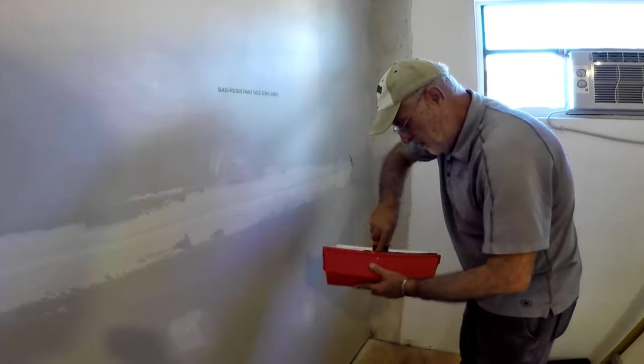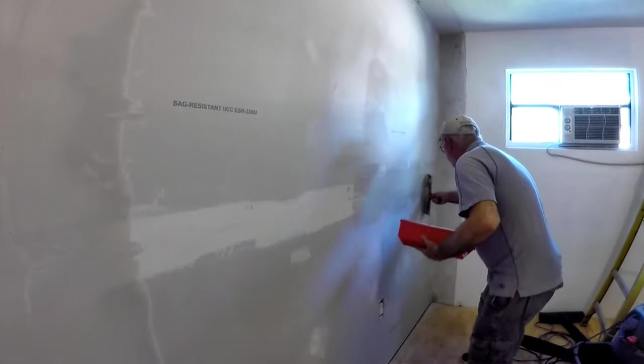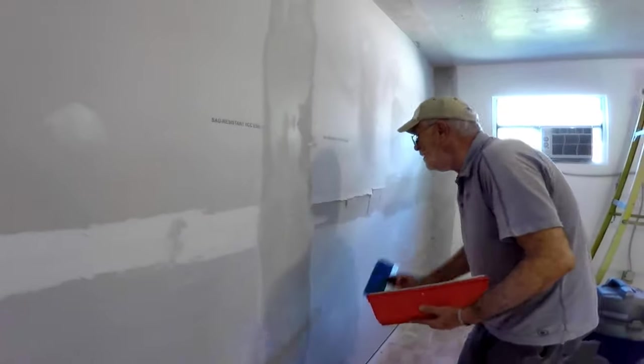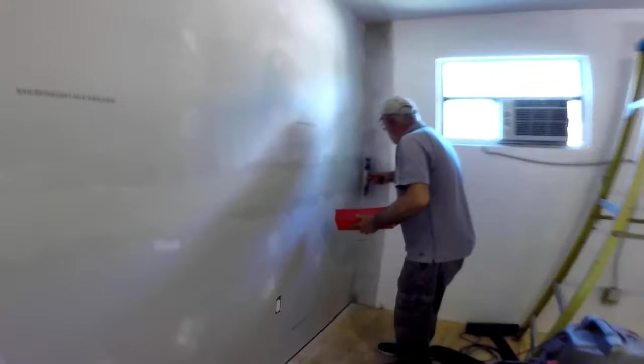But the smoother and even you apply the compound, the less sanding will be required. After the second coat has dried, we sand down the high spots and wipe down the area again before the final coat is applied to take care of the small imperfections. You can feel any of them by running the palm of your hand along the area.